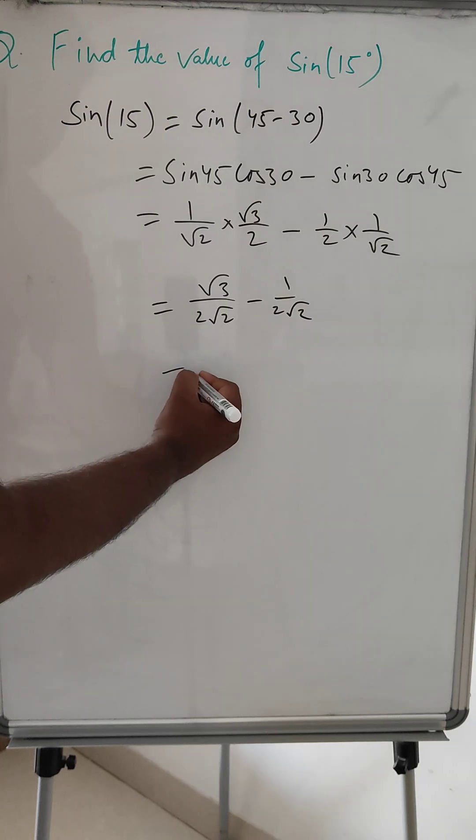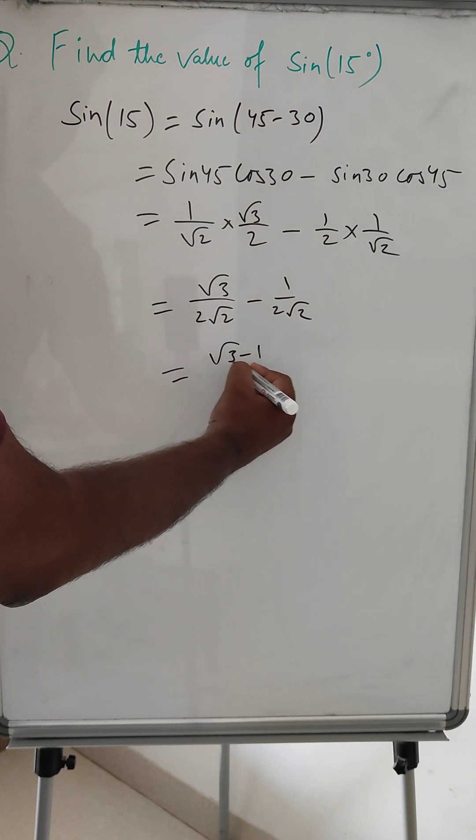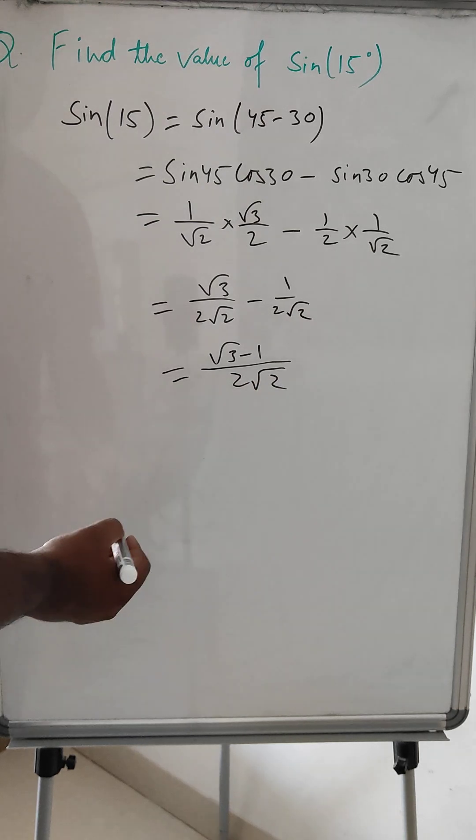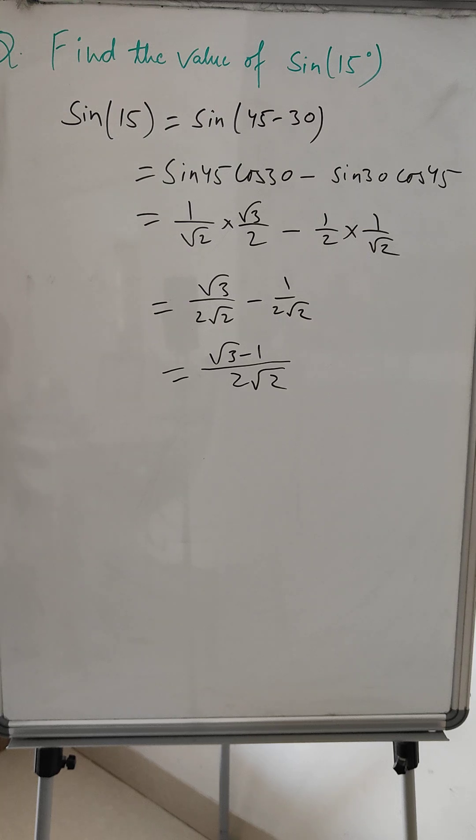So we can write this as root 3 minus 1 divided by 2 root 2. So this is the value for sin 15 degrees.